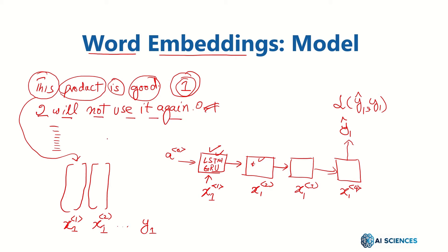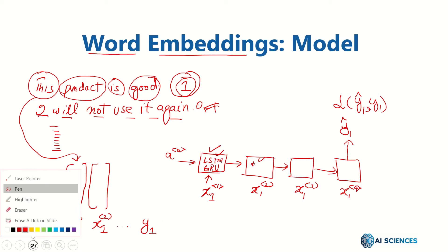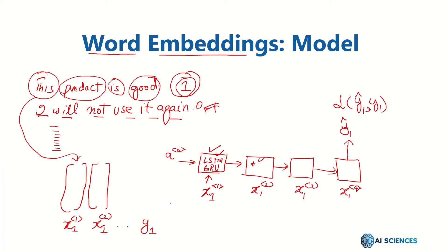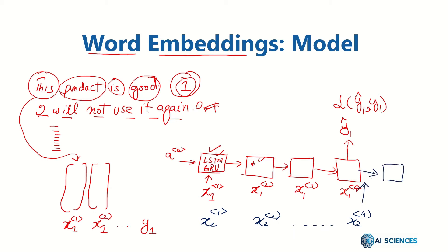So for the second example, when the second example is presented, the recurrent block will be unrolled — for example, x21, x22, down to x24, and then we will have the same block repeated.